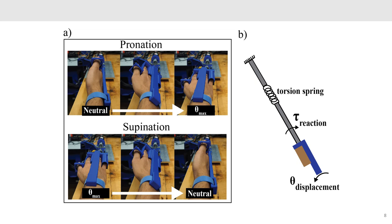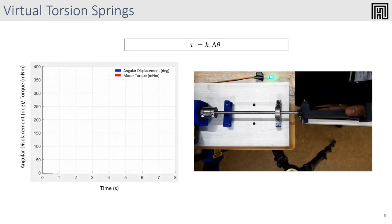The participants can feel the virtual torsion springs by pronating and supinating their wrist. A Kwanzer and Simulink interface is used to drive the motor to generate virtual linear torsion springs where the torque linearly increases with the input angular displacement.